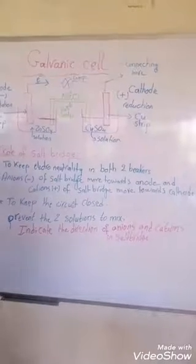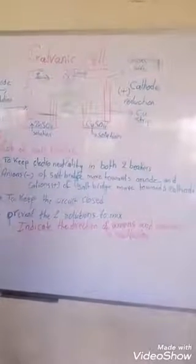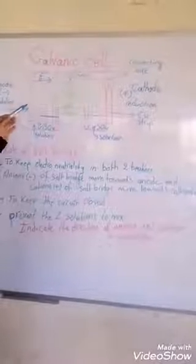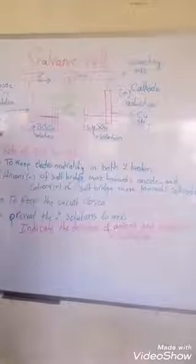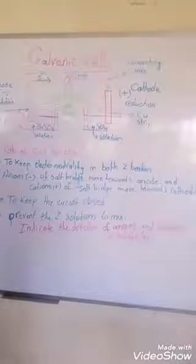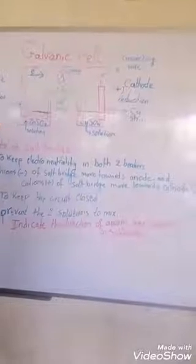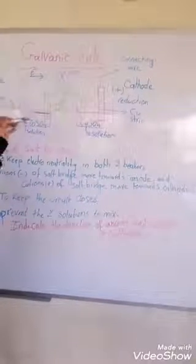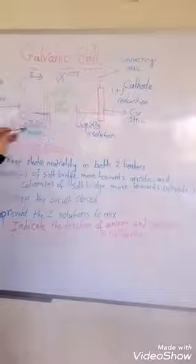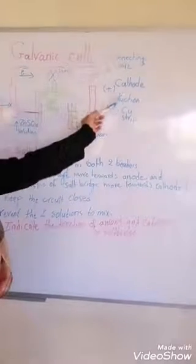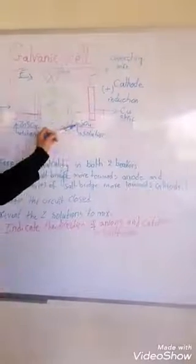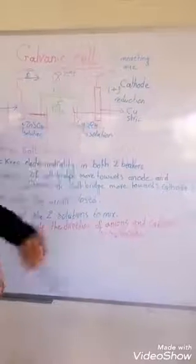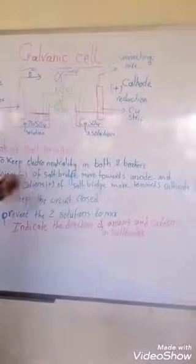First, the materials used in a galvanic cell: we use a zinc (Zn) strip which is placed at the anode. Don't forget that oxidation always takes place at the anode. Because we have a Zn strip, we must put ZnSO4 solution at the anode. At the cathode, we place a copper (Cu) strip with CuSO4 solution.